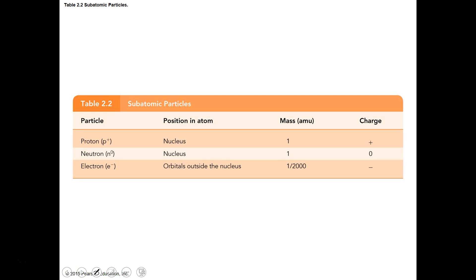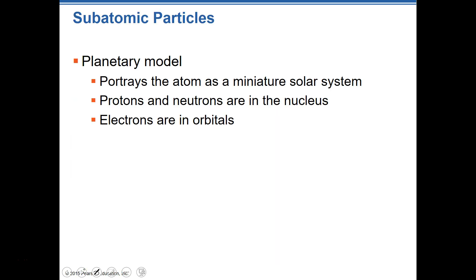The particles of atoms are: positively charged protons, negatively charged electrons, and neutral neutrons. Each one of these has a weight. Protons have an atomic mass unit (AMU) of one. Neutrons also have an atomic mass unit of one. Electrons do have a weight, but it's about one two-thousandth of a mass unit, so they have little effect on the overall weight of a particular atom.